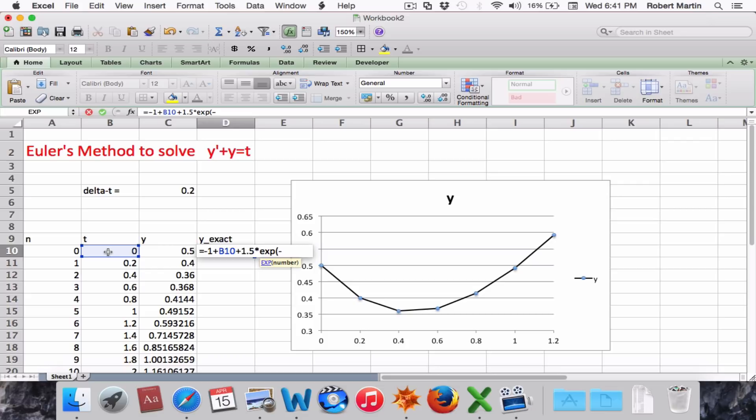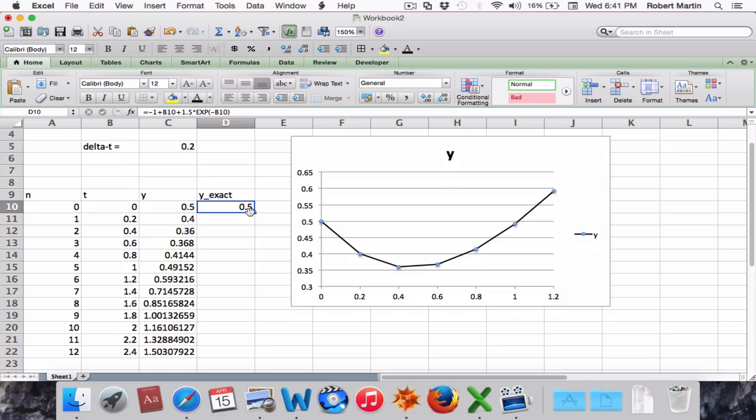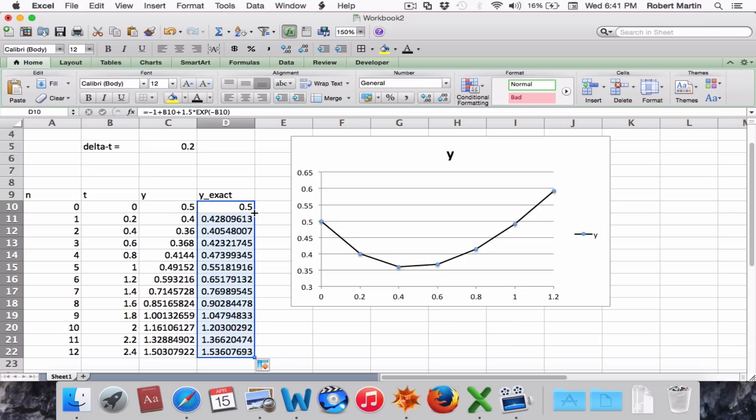for t, you select the cell where you see t. Close parentheses, enter. Now we simply select that cell, right-click the fill down button, and then we have the exact solution shown in that column.